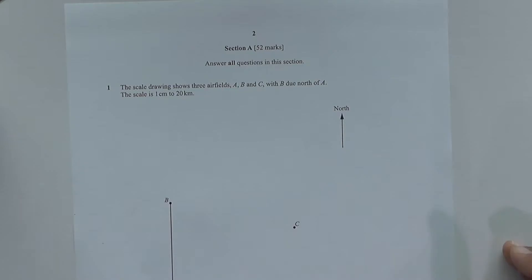Hi guys, we have an O-level past paper question from the year 2014, session May/June. This is question number one. The question is based on bearings and loci. The scale drawing shows three airfields A, B, and C, with B due north of A. The scale is one centimeter to 20 kilometers.